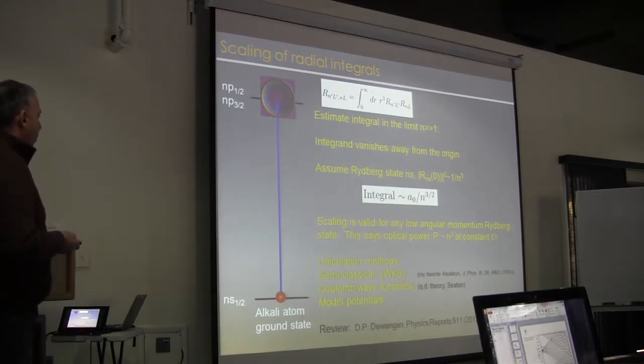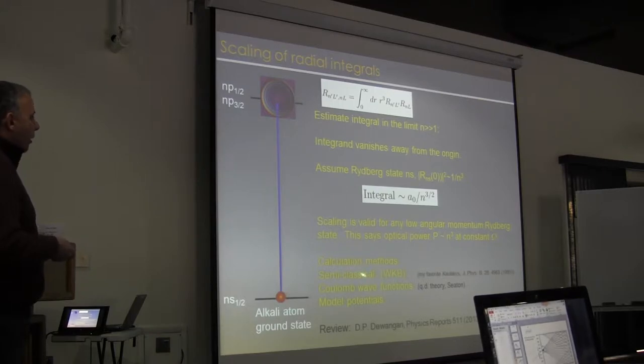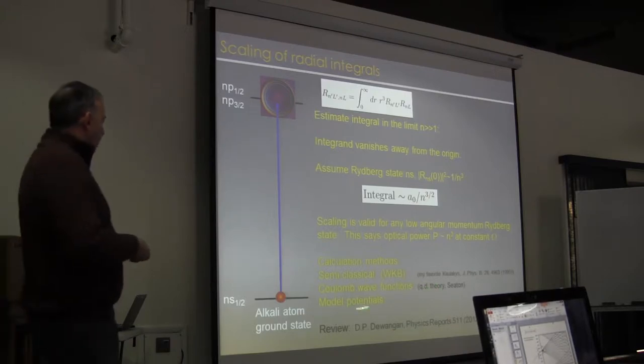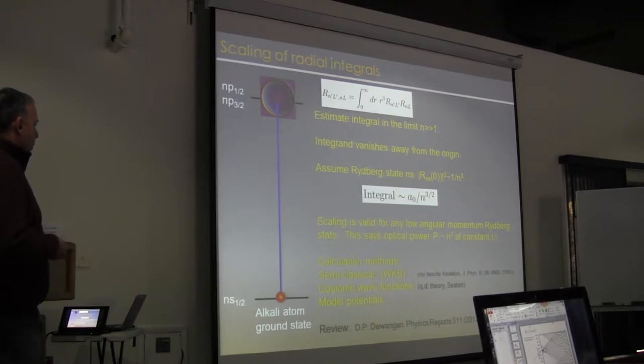To actually calculate the numerical value, there's different methods we could use. There's semi-classical WKB methods, and there's a number of variants of this when applied to Rydberg atoms. My personal favorite is this paper by Beterov from 20 years ago or so. We can use Coulomb wave functions, there's quantum defect theory, or we could use model potentials to calculate the wave functions. And you can find a very extensive review of different methods that have been used in this Physics Reports from a couple of years ago.